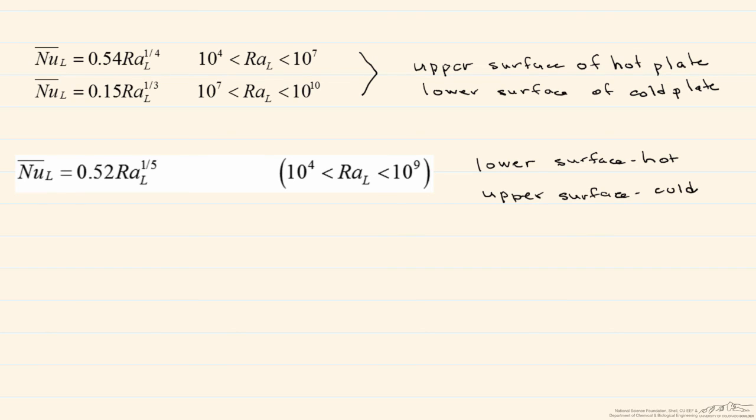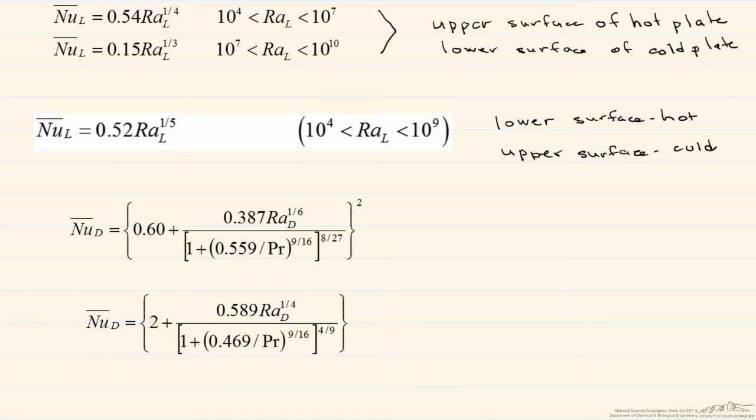In addition, we have correlations for long horizontal cylinders as well as spheres. So here we have that long horizontal cylinder, and here we have the correlation below for the sphere. And one of the things that you might notice compared to other forms of convection, except for the vertical plate, there's really only one choice that we're given to use to find our Nusselt number, and therefore our heat transfer coefficient, and then our heat transfer.